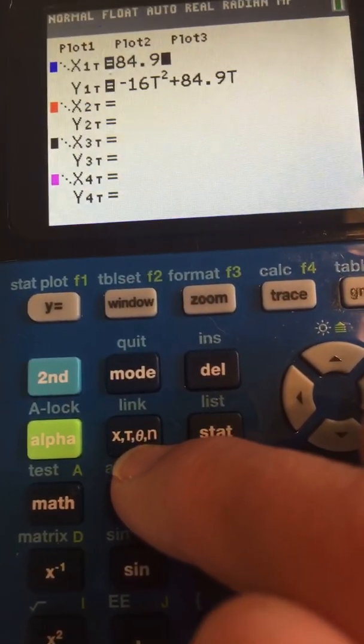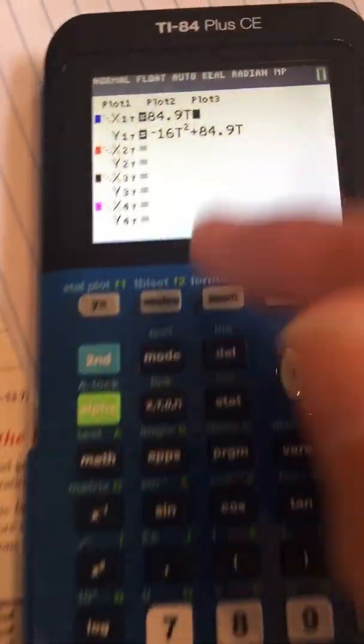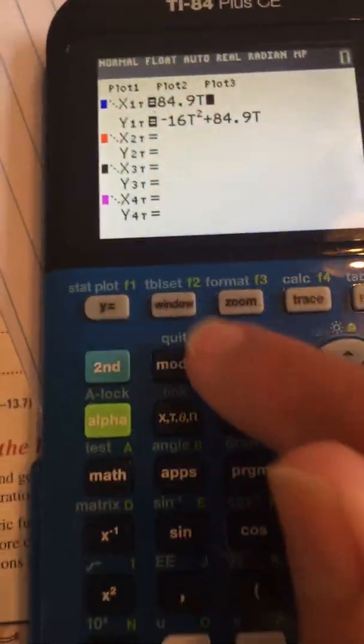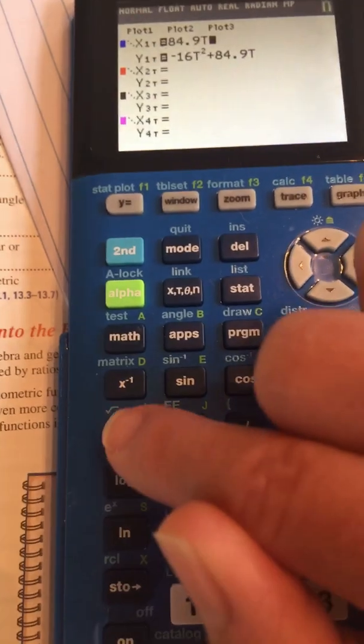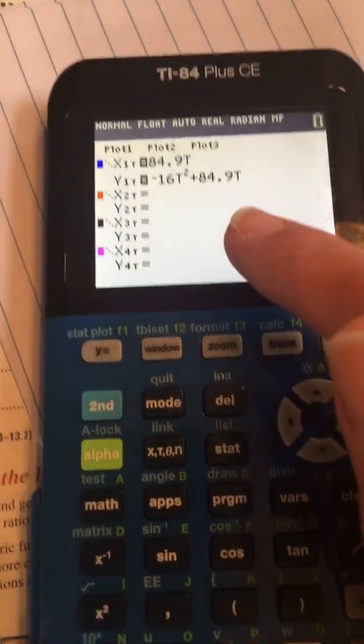See how T is the second thing? Your calculator knows it needs to be T because it's in parametric mode. Your calculator knows when it needs to be theta, when it needs to be N. Look, there's the T. And then negative 16T squared. I did T and then I hit the squared button and then plus 84.9T.